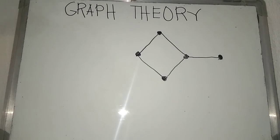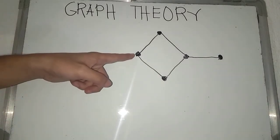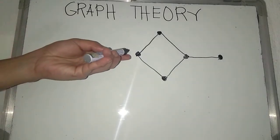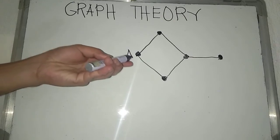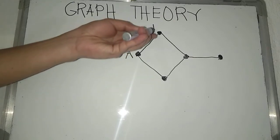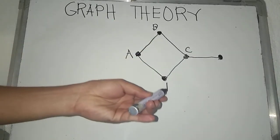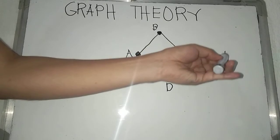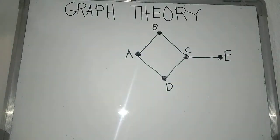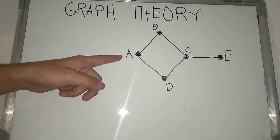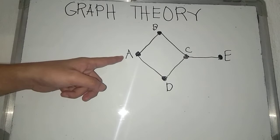Now, vertices are a set of points, or shall I say, the solid dots. The vertices are usually denoted by capital letters. So, assuming we have here A, B, C, D, and E. All the letters from the English alphabet can be used as the label for our vertices.